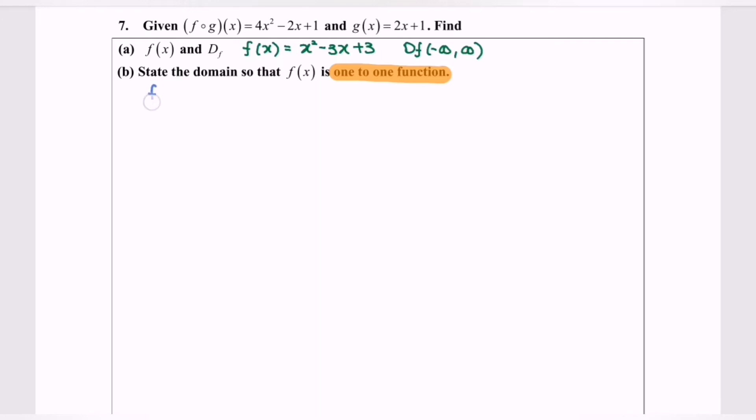Given f(x) equals x squared minus 3x plus 3. So now we're going to complete the square so that it becomes a standard form. So f(x) equals x squared minus 3x plus bracket squared minus bracket squared plus 3.